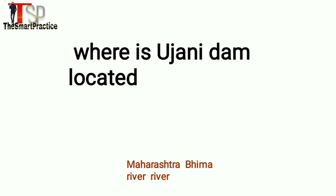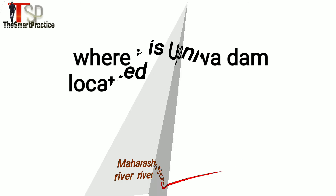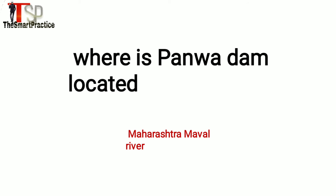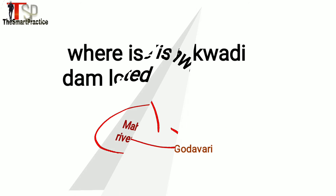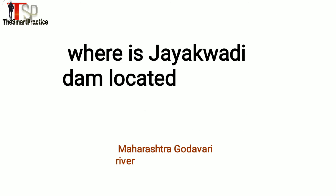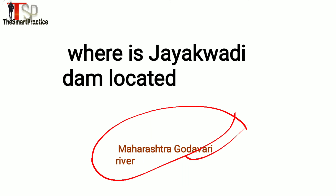Where is Ujani Dam located? Maharashtra, Bhima river. Where is Panwa Dam located? Maharashtra, Marble river. Where is Jayagwadi Dam located? Maharashtra, Godavari river.